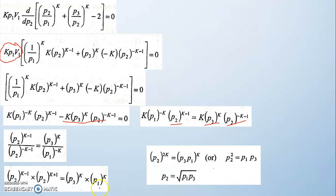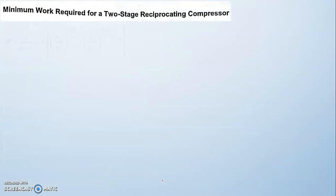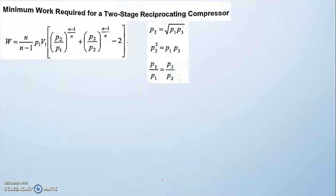This is the condition for minimum work done. If the work is to be minimum, the intermediate pressure p2 should equal the square root of the product of p1 and p3. This is also the same derivation for finding the intermediate pressure. Now we apply this condition to the work done equation, substituting p2 = √(p1·p3).